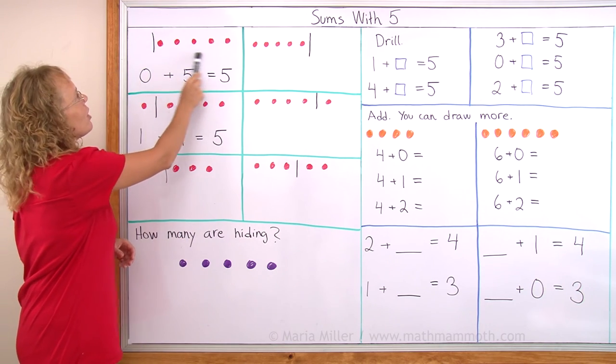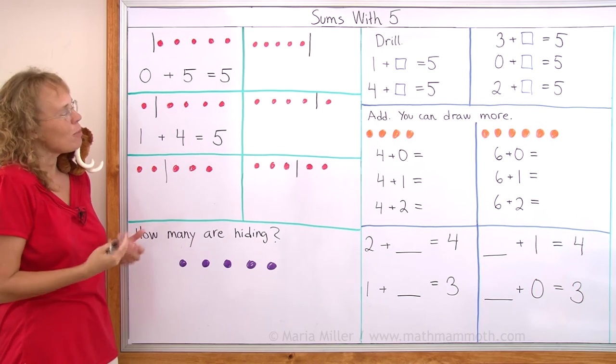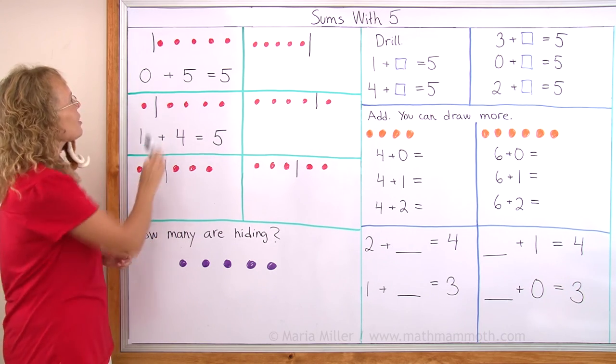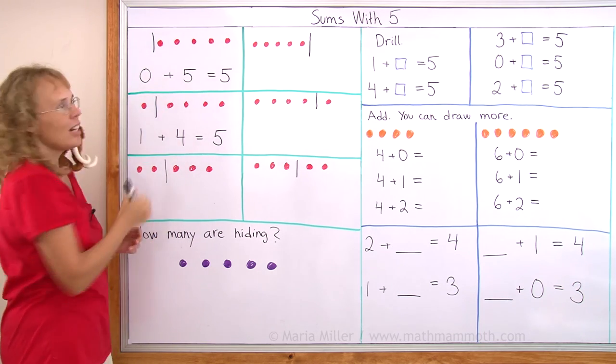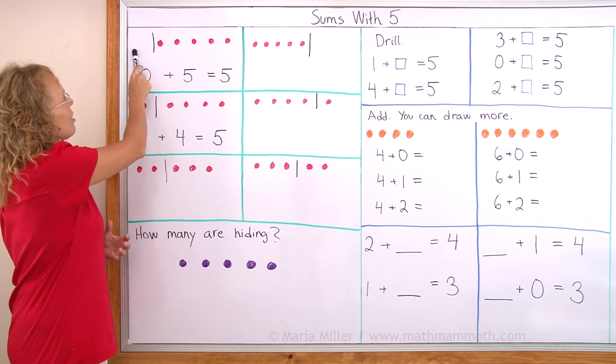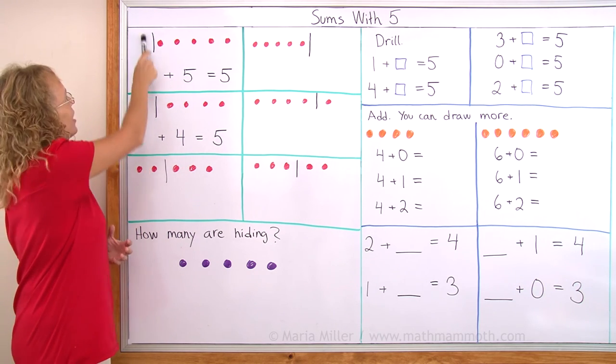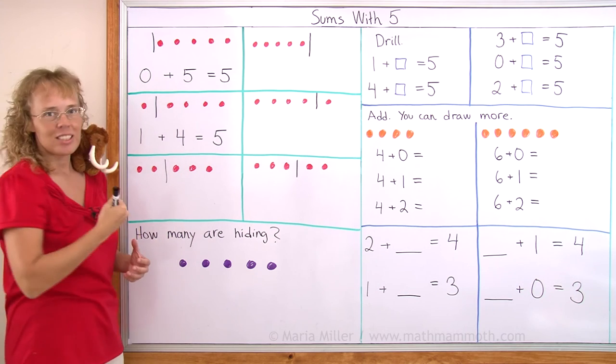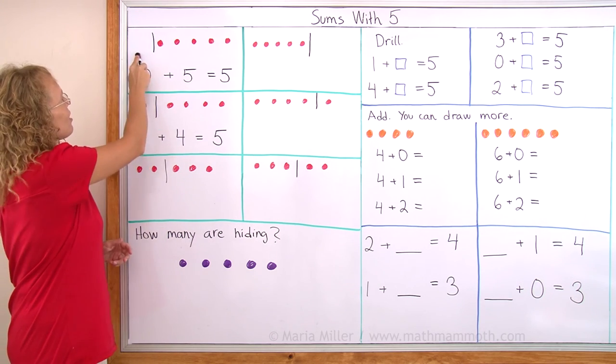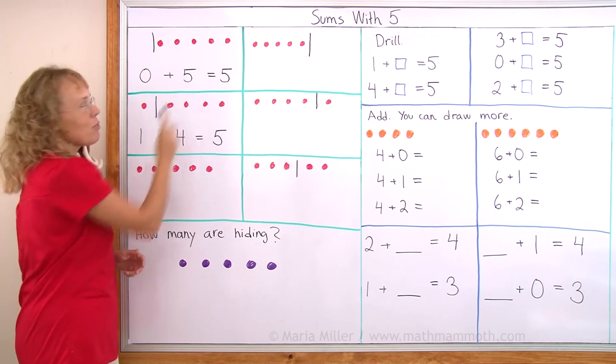Look, I drew here five red dots or maybe they are strawberries. Five strawberries. And so in this one here I have them in two groups. Zero on this side of the fence and five strawberries on this side of the fence. So I have zero plus five and that equals five.